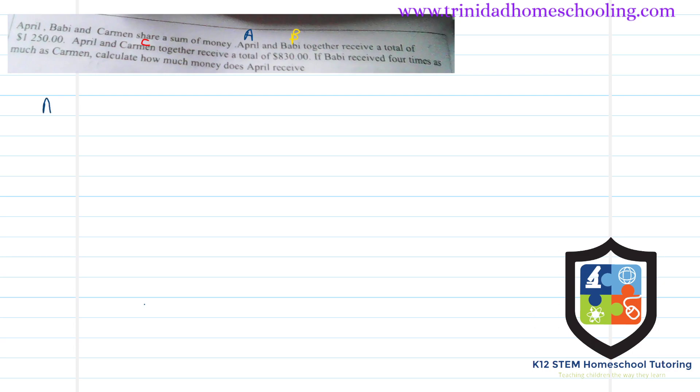Let's model this question. They said that April and Barbie, meaning plus here, receive a total amount of $1,250.